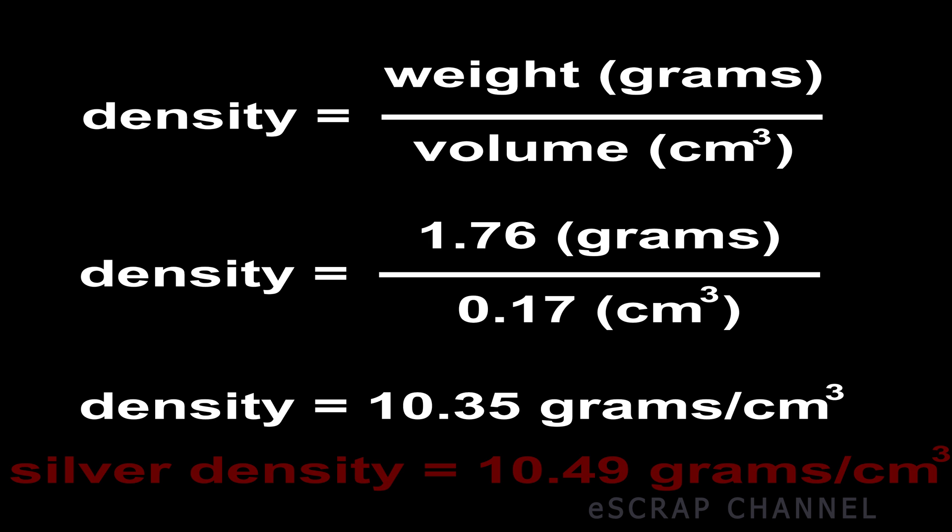which is close to the density of pure silver. Pure silver density is 10.49 grams per cubic centimeters. Of course we don't get the exact result but it's good indication that this is pure silver. And it's not exact result just because of the accuracy of our scale. It can measure only two signs after the decimal.